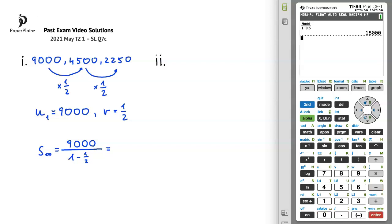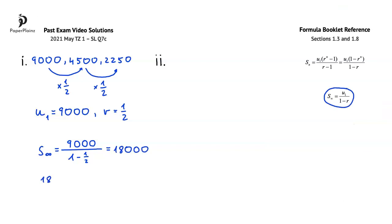The result of this calculation is 18,000. Now we just have to write down that 18,000 is less than 20,000, so Chris will never reach his target.